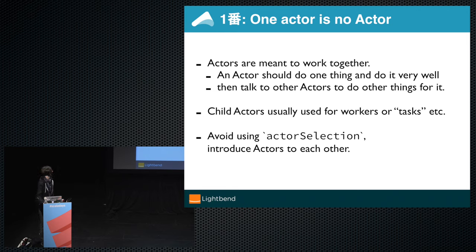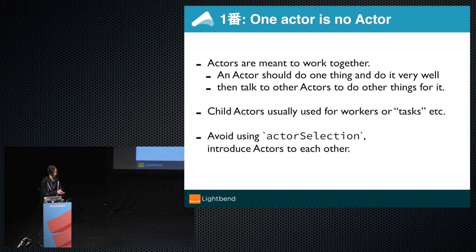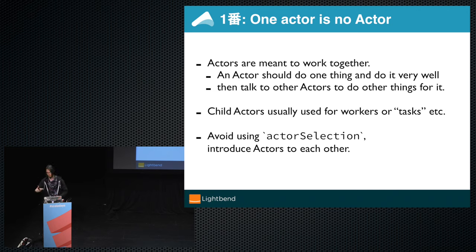One tip: avoid actor selection. The problem is sometimes people figure out that they can find an actor just by their address that they hard-code somewhere. This is kind of like going to a random stranger's house because you know where they live and taking their TV. Actors should be introduced to one another — hey, if you want to talk about yellow messages, here's an actor ref that handles those. You shouldn't be randomly guessing addresses.